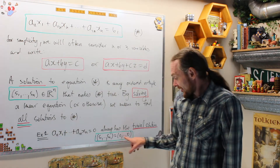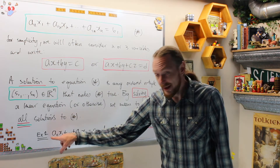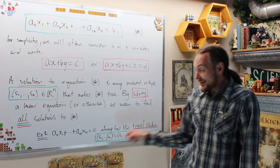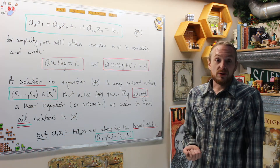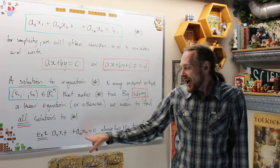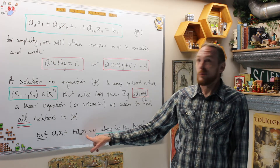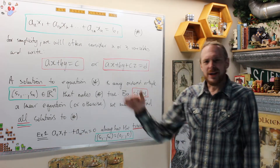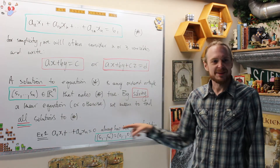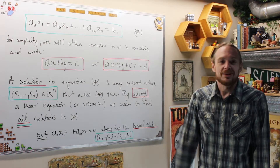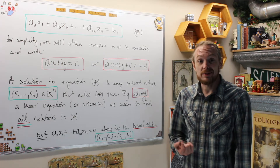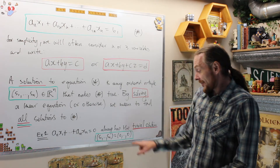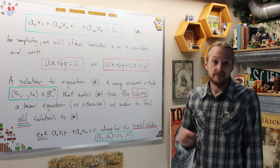The trivial solution always solves a homogeneous equation — the zero solution always solves the equation where you have a bunch of variables equaling zero. So in questions, we'll ask: can you find non-trivial solutions to this homogeneous system? We call it homogeneous because the right-hand side is zero, and the zero solution always solves all those equations simultaneously.